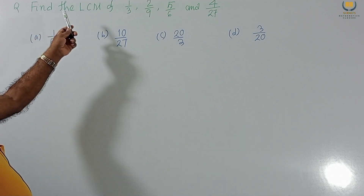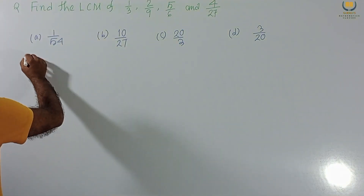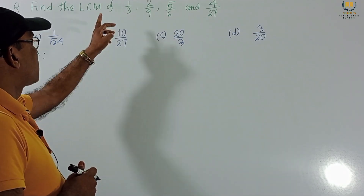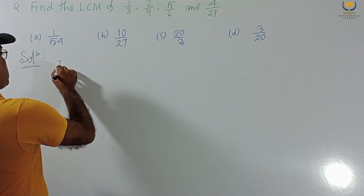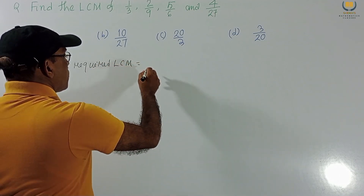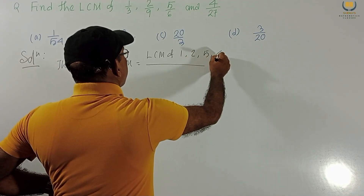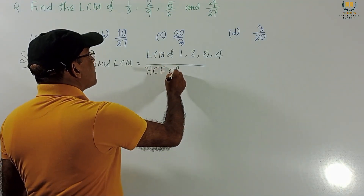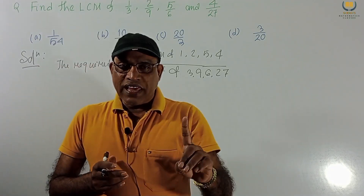Let us consider one problem: Find the LCM of 1/3, 2/9, 5/6, and 4/27. We know one formula: LCM of fractions equals LCM of numerators divided by HCF of denominators. So the numerators are 1, 2, 5, 4, and the denominators are 3, 9, 6, 27.